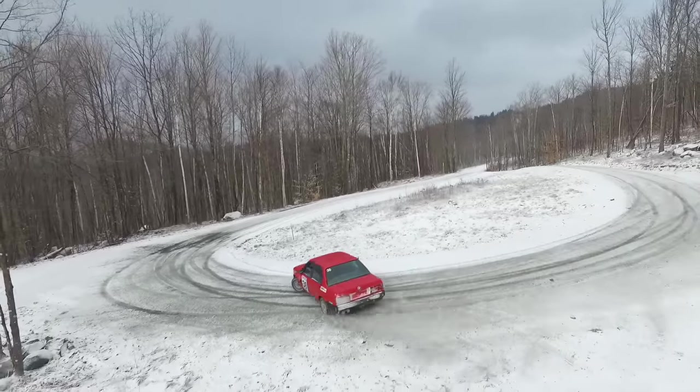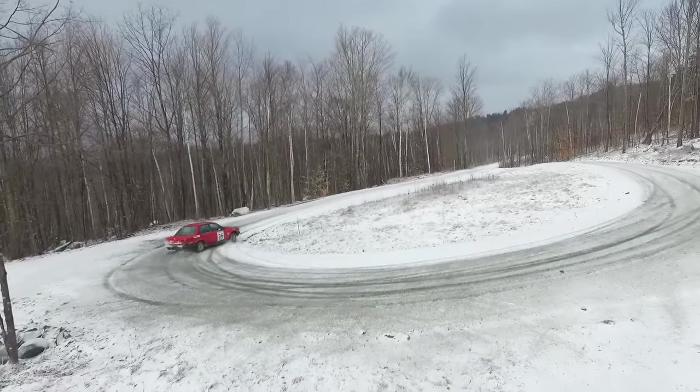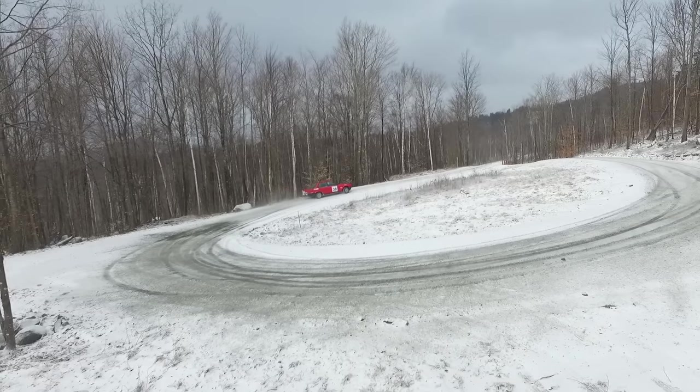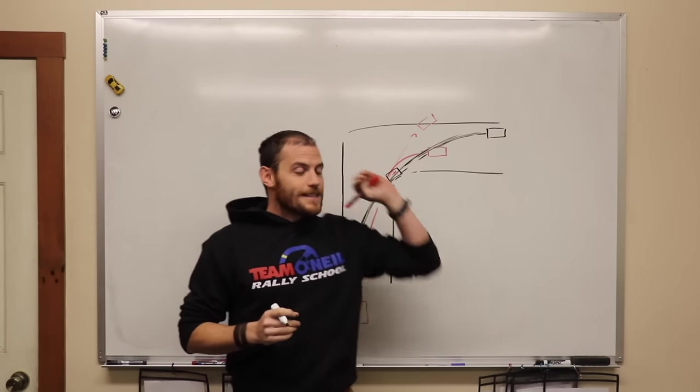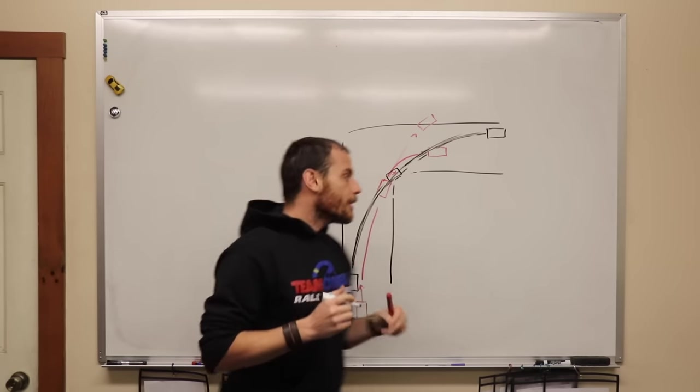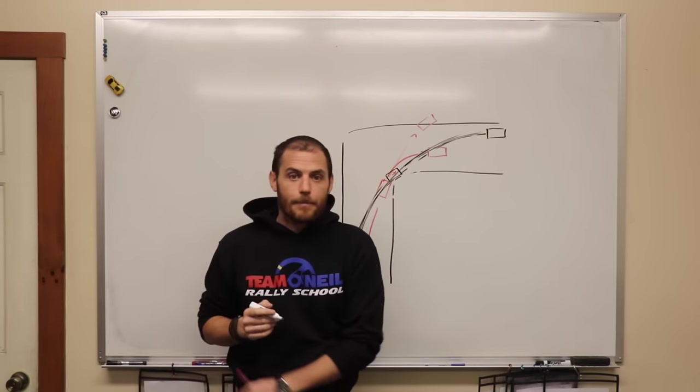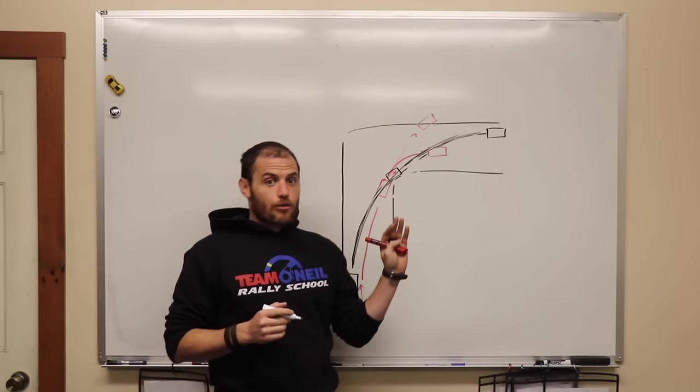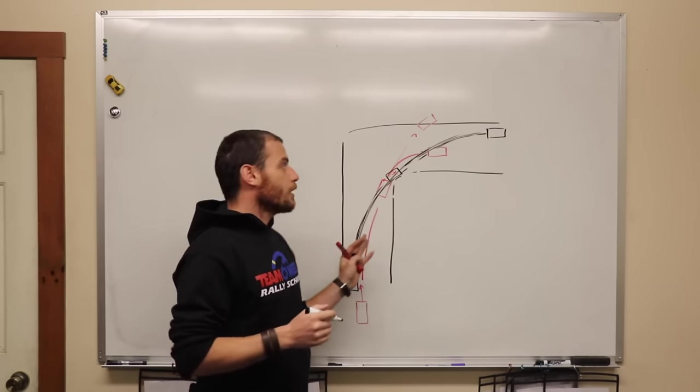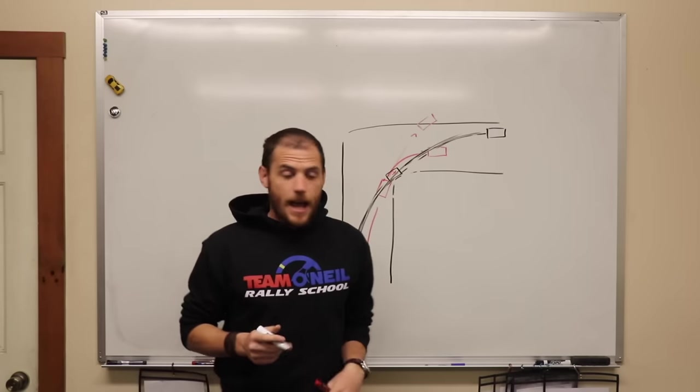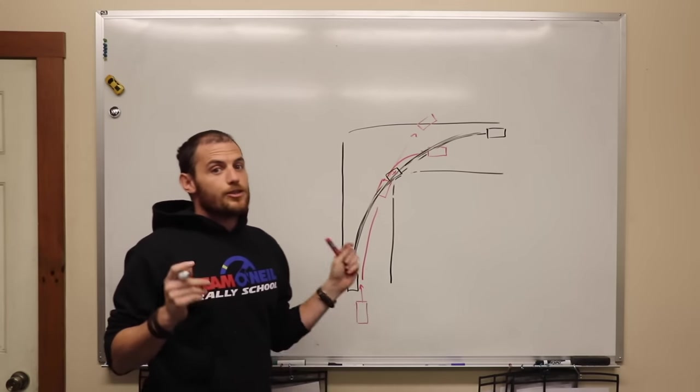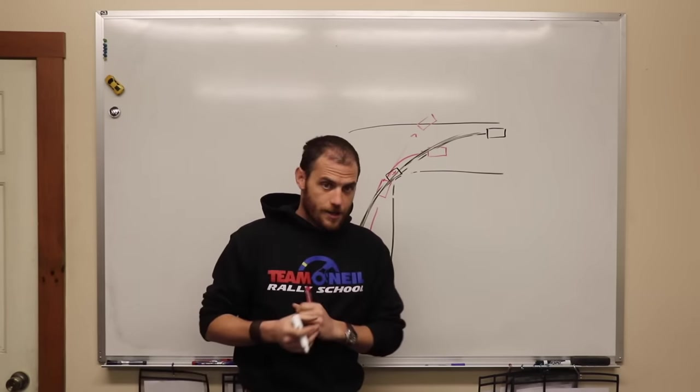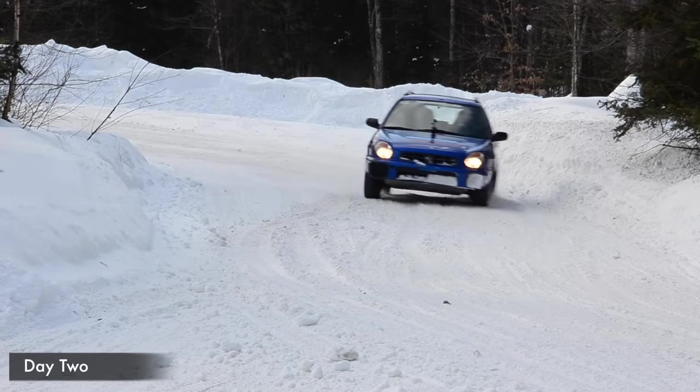The problem with the traditional racing line is that it really only works well on roads that you know perfectly. You know exactly the right amount of speed for the corner. You can tell what's going to be around the apex. If this is a blind turn on a road you've never been on before and your co-driver just says right three and you're coming in hot into this thing, the issue you run into is you have no room for error.